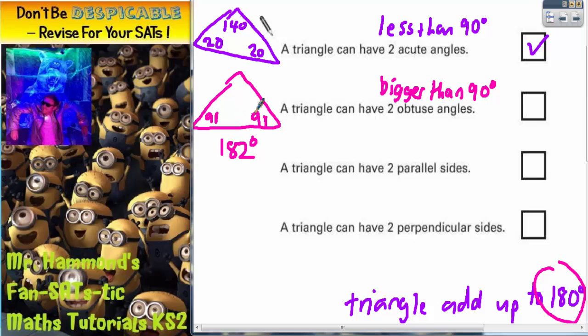Now, if those two make 182, we would have nothing left to be able to do the third angle. So we aren't going to be able to make a triangle with two obtuse angles and another angle on top, because that is going to go way over 182 degrees. So that one is going to be impossible.